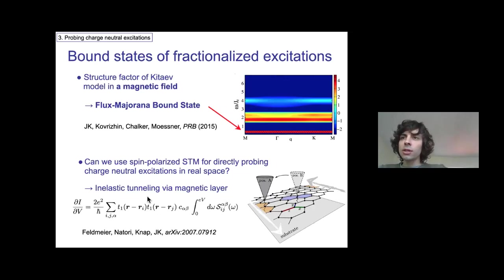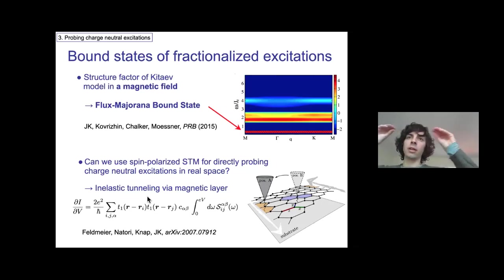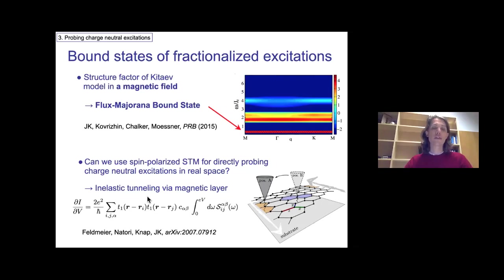Question: So you say it's sharp — if the flux has dispersion, is it still a sharp band or is it actually also a two-particle continuum that is very narrow? Answer: You're right. If you're basically beyond the integrable limit, then there will be some width to this sharp peak.